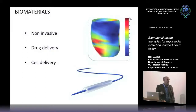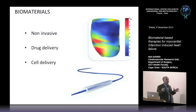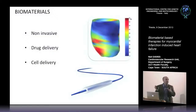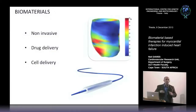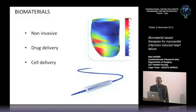Why biomaterials? You don't have to open the chest — you can deliver them with a catheter. Many catheter types allow remote injection into the heart wall. Even more importantly, using biomaterials you can have a multi-pronged approach, because you can't treat such a complex pathology with a single approach. You can deliver drugs — things like growth factors, potentially microRNAs or silencing RNAs — and you can also deliver cells.